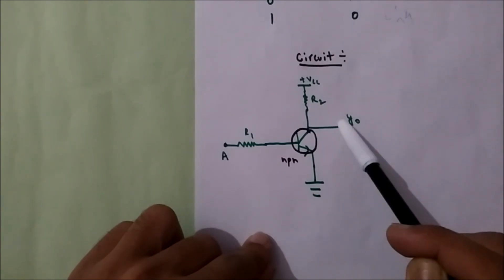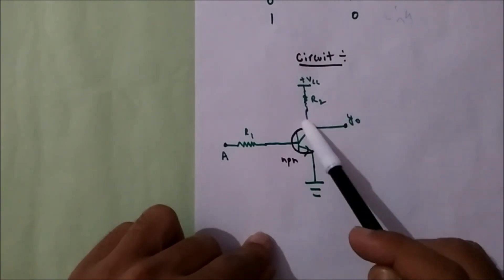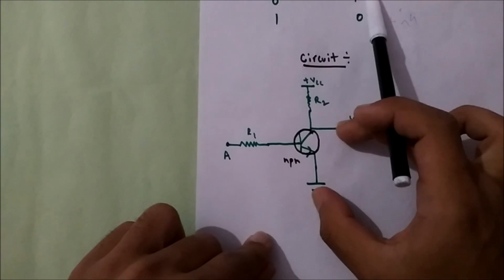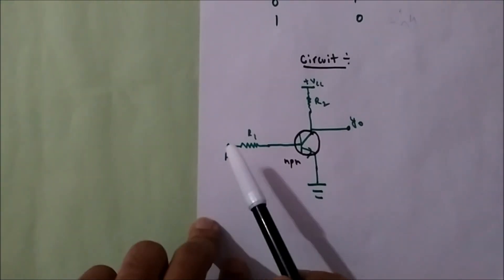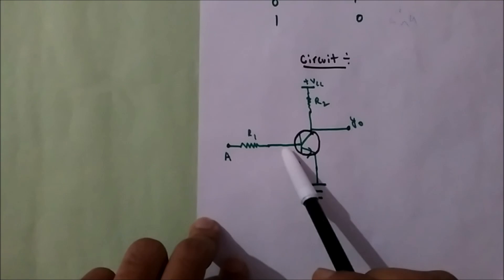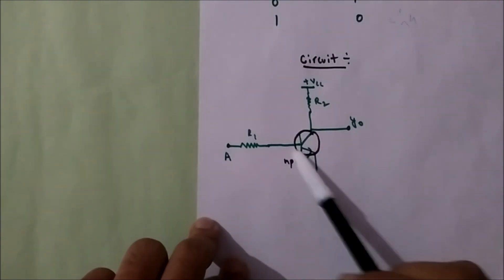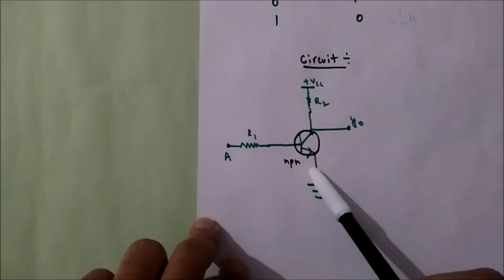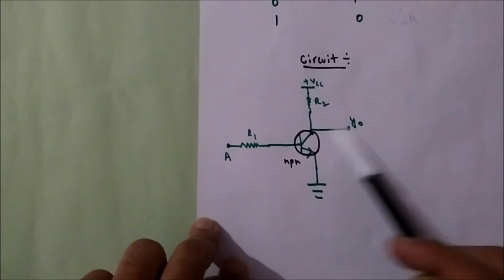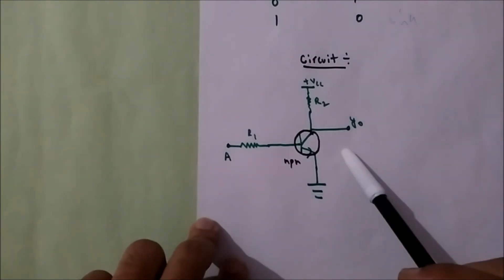If the transistor is in off condition, there will be an open circuit, so all the current will flow through the LED and go to ground. I take output between these two terminals. If I give one, the base gets voltage, current flows to the base, and the transistor will be in on state — it will act as a short circuit. All current will go from collector to emitter to ground, and we'll get no voltage at the output. So for one we get zero, and for zero we get one.